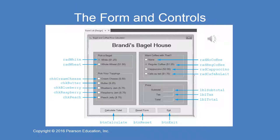Here we have the form and all of the controls that you'll need to add to the form. You even have the control names. You've got radio buttons for the type of bagel — white or whole wheat — check boxes for the toppings, and radio buttons for the coffee. Then you've got your subtotal, tax, and total labels. You have three buttons: button calculate, button reset, and button exit.